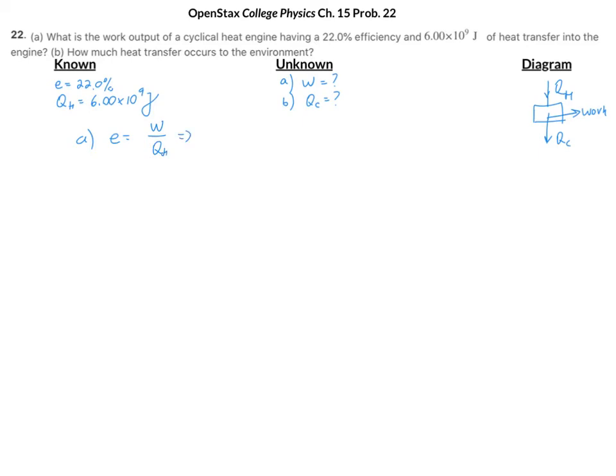And that means that work is equal to efficiency times Q_H, and that is 0.22 times 6.00 times 10 to the 9th. And when we multiply these, we end up with 1.32 times 10 to the 9th joules.